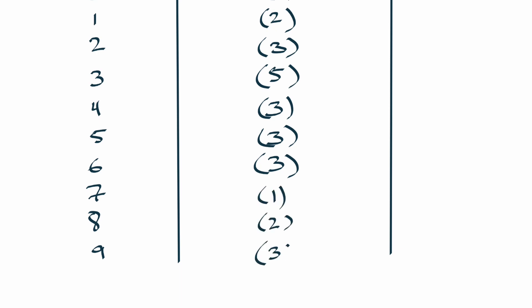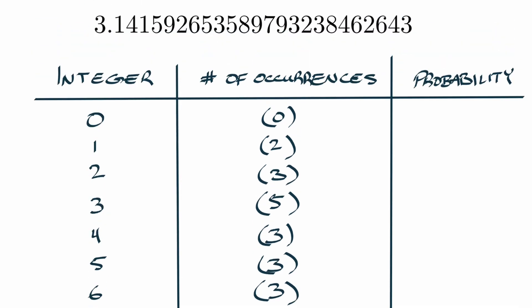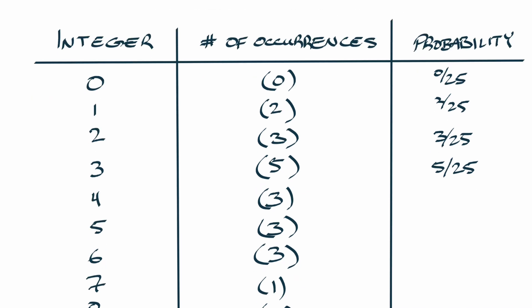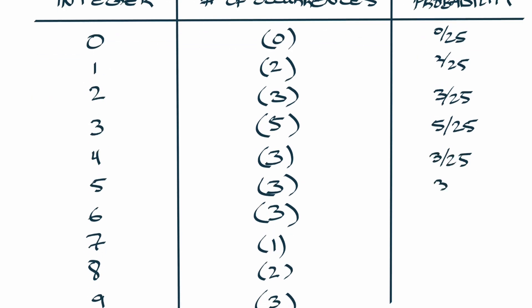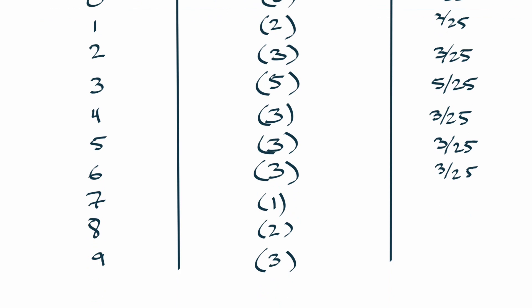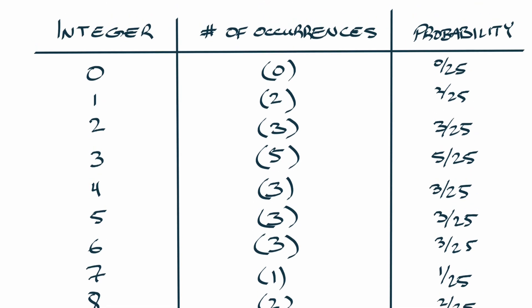What's the probability? Zero out of 25, two out of 25 which would be 8 percent, three out of 25 which would be 12 percent, five out of 25 which is 20 percent, three out of 25, three out of 25. I could be writing this as percentages, but I'm going to keep it all out of 25 because then it's easier to compare relative probabilities among all the different numbers if they have the same denominator.